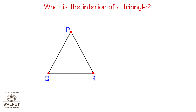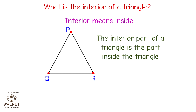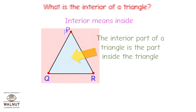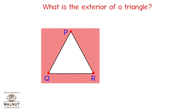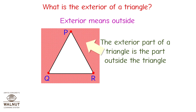What is the interior of a triangle? Interior means inside — the interior part of a triangle is the part inside the triangle. What is the exterior of a triangle? Exterior means outside — the exterior part of a triangle is the part outside the triangle.